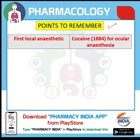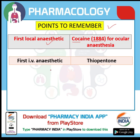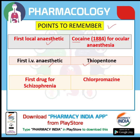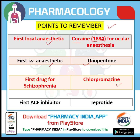The first local anesthetic is cocaine, used for ocular anesthesia in 1884. The first IV anesthetic is thiopentone. The first drug for schizophrenia is chlorpromazine. The first ACE inhibitor — angiotensin converting enzyme inhibitor — is teprotide.